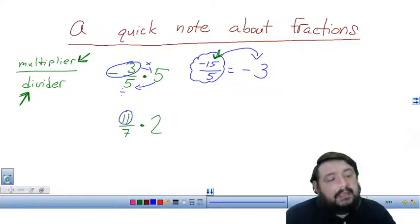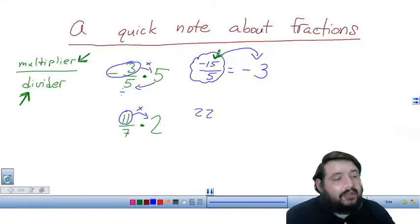11 on top. Is this a multiplier or a divider? Very good. If you said multiplier, you are right. What's 11 times two? It's 22. Okay, and what do I do with that bottom number again? Oh yeah, I divide it.